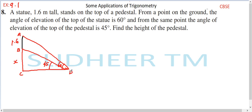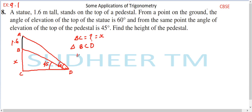Let the pedestal height be x. Let us name the triangles A, B, C, D. We need to find BC equal to x. We have two triangles and two angles. Let us consider triangle BCD first. For triangle BCD, the angle at D is 45 degrees.